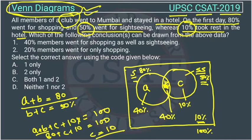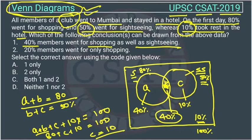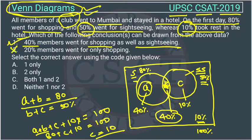40% of members went for shopping as well as sightseeing — so the statement '40% went for both' is correct. The statement '20% went for only shopping' is wrong, because A is 40, not 20. Therefore, only the first statement is correct, and the answer is A.